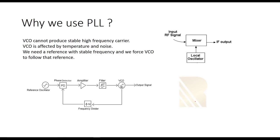Let's start from the local oscillator. As you see in the mixer, we have a local oscillator and we need a carrier, but this carrier should be stable — we need a stable frequency of F0. VCO cannot produce a stable high-frequency carrier because it is affected by temperature and noise. As you see in this picture, we need to make a system to stabilize the frequency of VCO, and in this system we need a reference oscillator. The most important benefit of this reference oscillator is that it is stable, while the VCO is unstable.